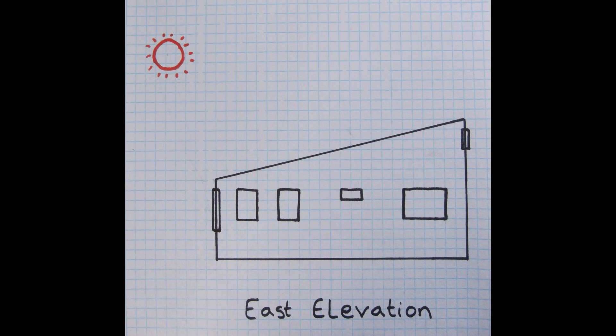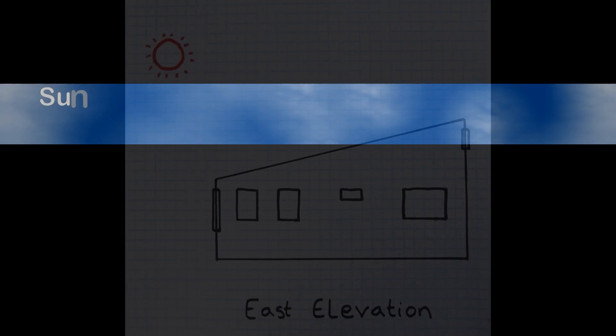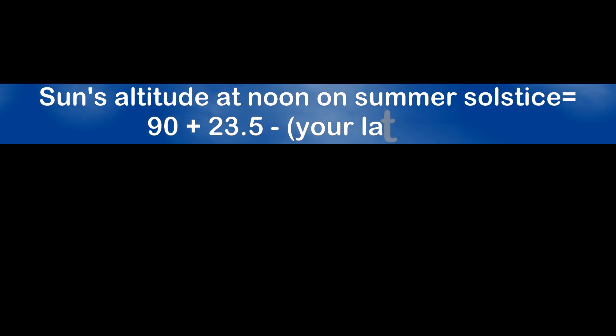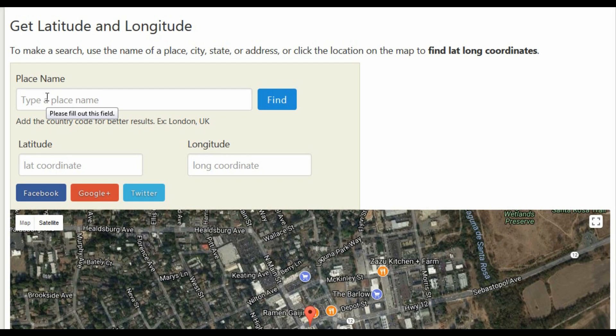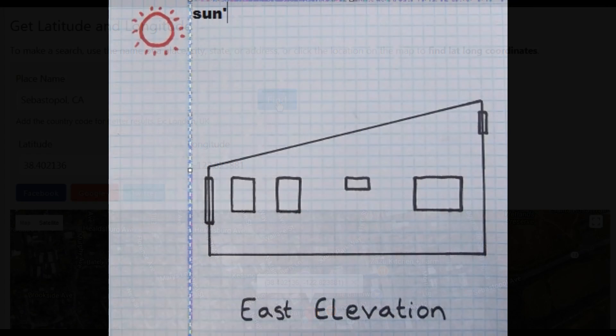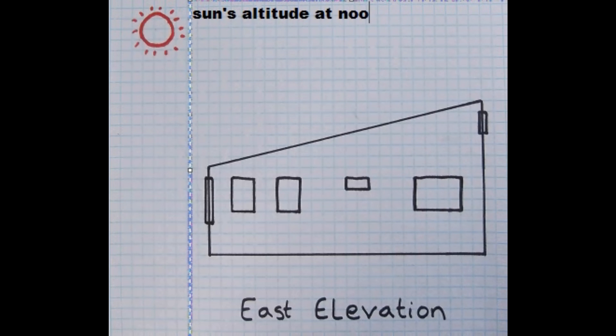To calculate the sun's altitude on the summer solstice for your location, you can use the following equation. The sun's altitude at noon on summer solstice is equal to 90 plus 23.5 minus your latitude. You must look up on a map or the internet the latitude for the location of your home. The latitude for Sebastopol, California is 38.4 degrees. Now we can plug this into the equation so that the sun's altitude at noon on summer solstice is equal to 90 plus 23.5 minus 38.4, which gives us 75.1 degrees.